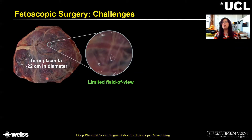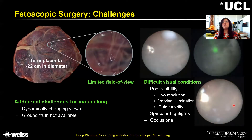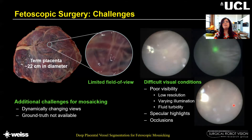Here you can see an ex vivo term placenta which typically is about 22 centimeters in diameter, but what a surgeon sees during a fetoscopic procedure is just a few millimeters of field of view. In addition to this, the visibility is quite poor during the fetoscopic procedure due to low resolution, low illumination, and fluid turbidity. Moreover, occlusion due to the fetus and working channel port are present, and there are specular highlights resulting in glare and reflection. The views are dynamically changing, which results in lack of long-term consistency.